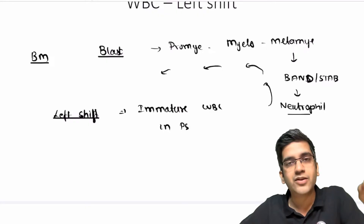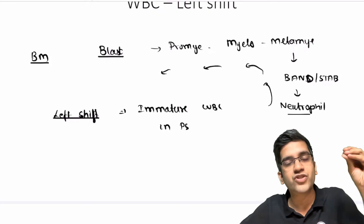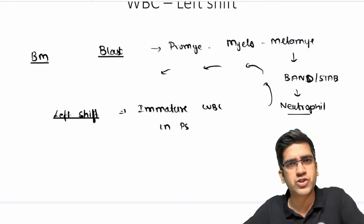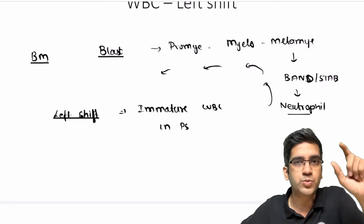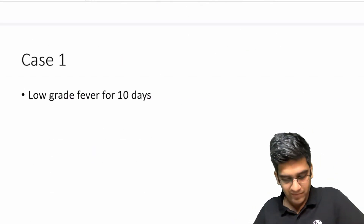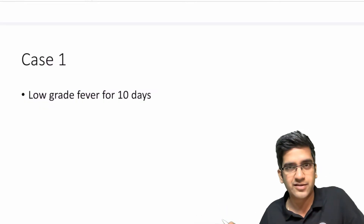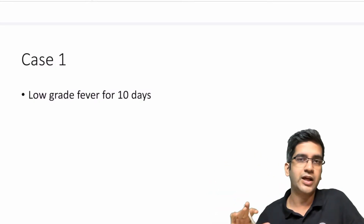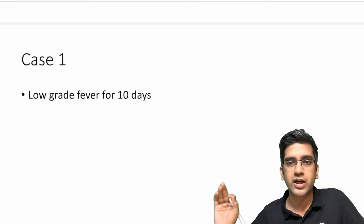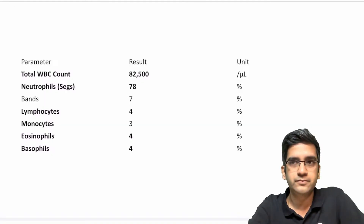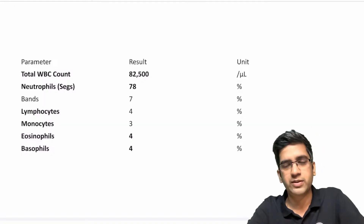Whenever you see immature WBCs in your peripheral smear — not in the bone marrow, where they are completely normal — we call it neutrophilic left shift. This is a very important indicator that something is happening; the bone marrow is releasing them prematurely. There could be multiple possibilities, and we're going to discuss two such possibilities. So, given a history of low-grade fever for 10 days, I'm going to display the CBC report — just the WBC part — and I want you to comment on what you think.